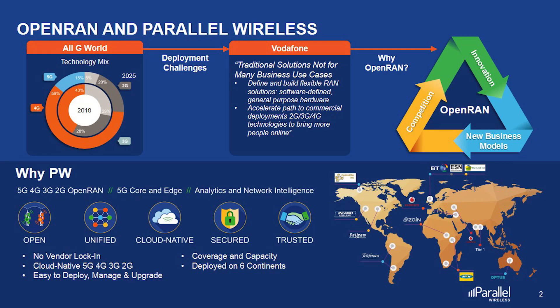It's an All-G world for global operators. Although their focus has shifted to rapidly expanding 4G and now 5G into their networks, 2G and 3G connectivity is still the most used technology for deployed devices. Parallel Wireless understands this and implements the key principles of DevOps and automation, because deploying, maintaining and optimizing 2G, 3G, 4G and now 5G networks requires a lot of manual labor and carries a very high price tag. This is why OpenRAN must address not just 4G and 5G but also 2G and 3G.